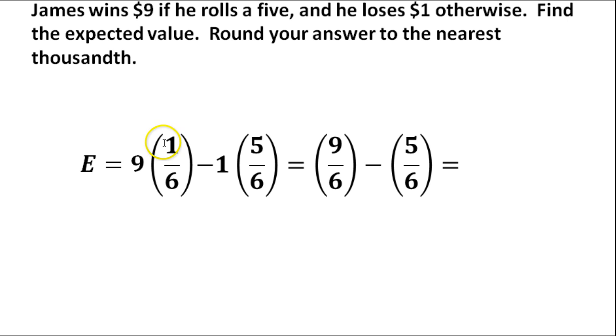Now if we simplify this a little bit further, all I do is distribute this. 9 times 1 gives me 9 sixths. 1 times 5, we just subtract those. This ends up giving me 4 sixths. 4 sixths, it does ask me to round it to the nearest thousandth. Thousandth is 3 decimals, so that'll be .667.